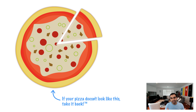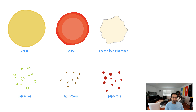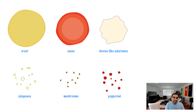In case you haven't had pizza for a while, this is what a typical pizza looks like. You have your crust, you have ingredients, and just the normal stuff that goes into a pretty typical pizza. A pizza is made up of a variety of ingredients — some are complex, and some are pretty simple. Complex ingredients are ones like your crust, your sauce, your cheese-like substance. Some more simple ingredients might be like your jalapenos, mushrooms, pepperoni, and some of the more basic toppings.